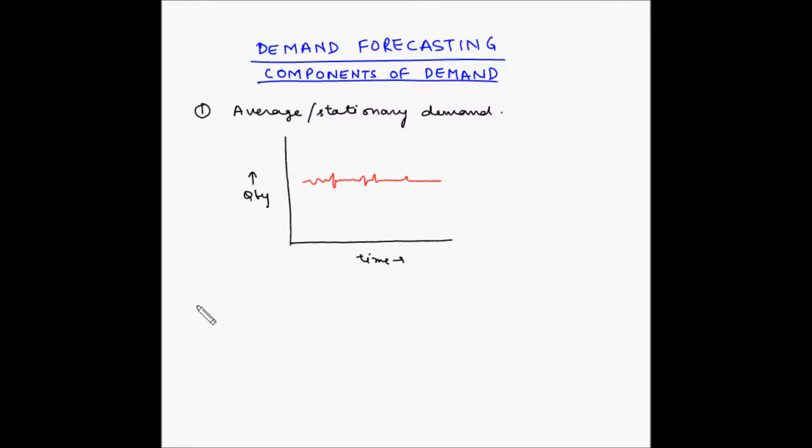The second component of demand is trend. Over a period of time, the demand may have an overall tendency either to move upwards or downwards. This tendency of demand is known as trend.